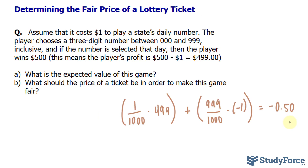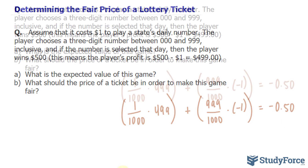What this means is that the player should expect to lose 50 cents for every game played. Now because the expected value isn't zero, by definition, this is an unfair game. That being said, if a game has an expected value of zero, then the game is called fair.